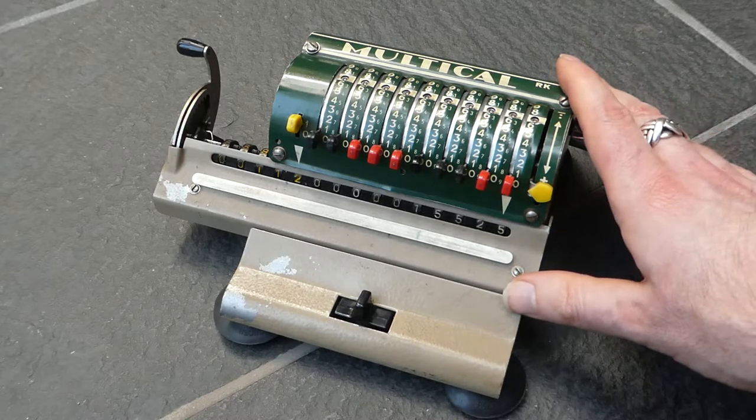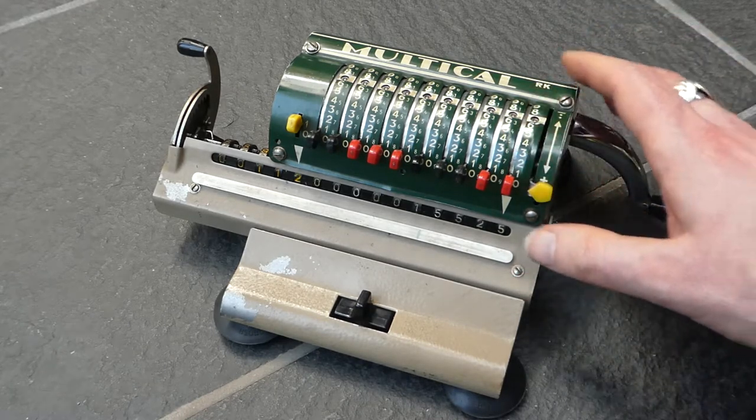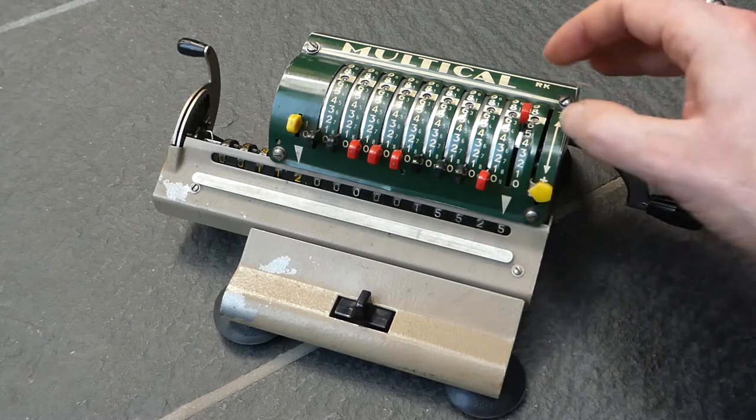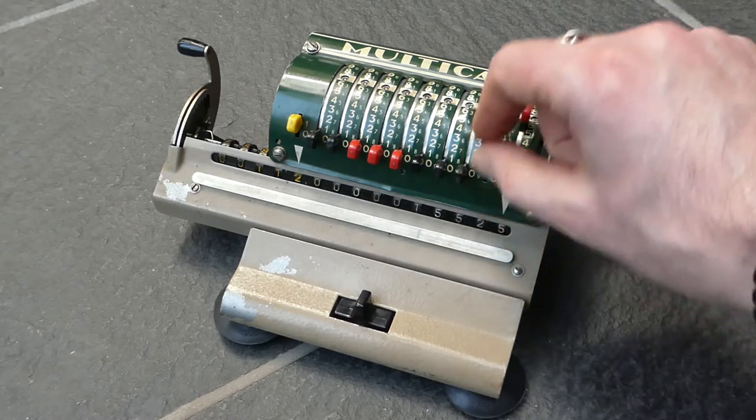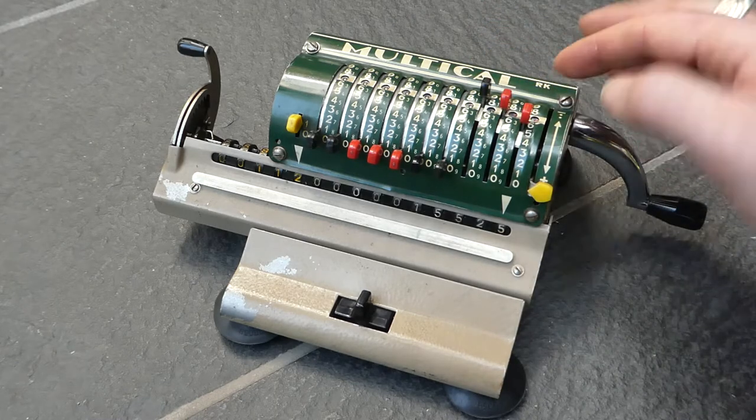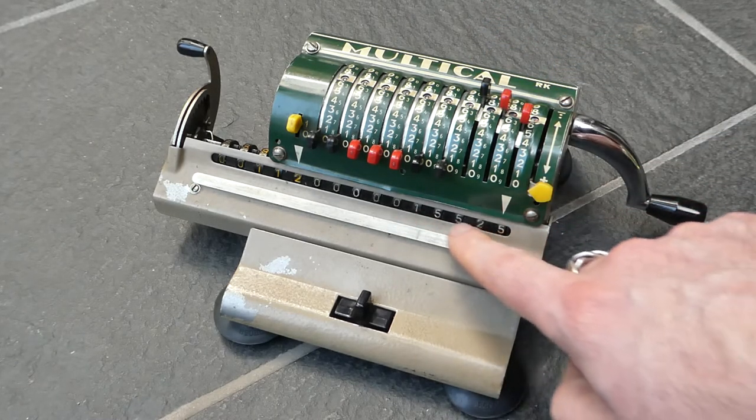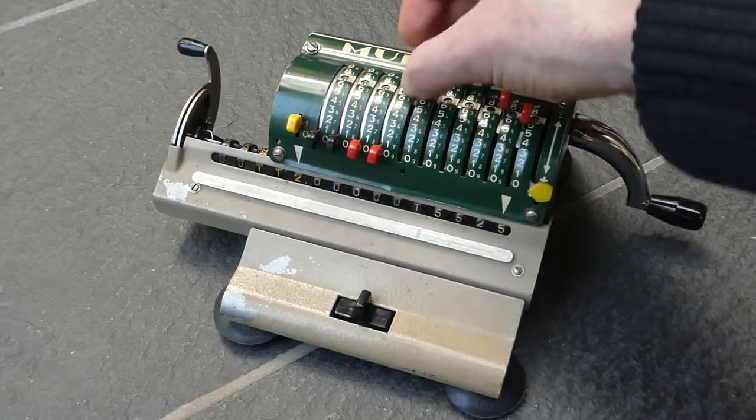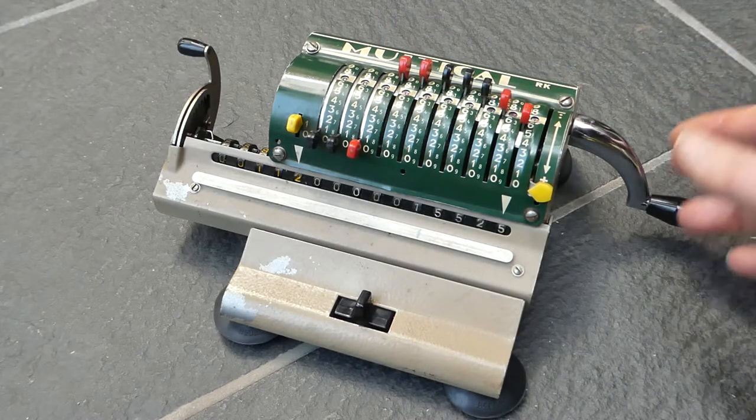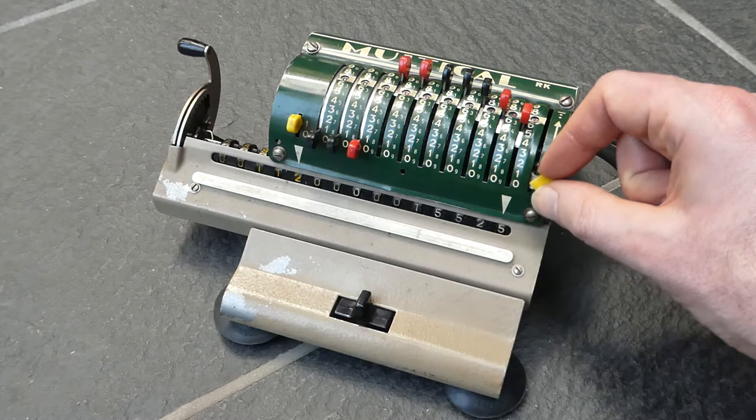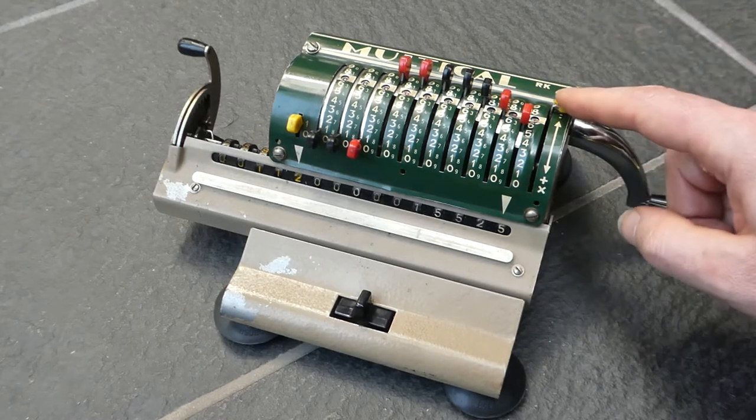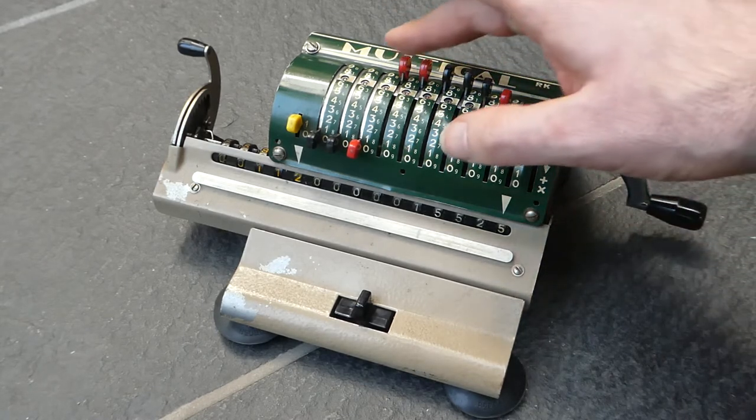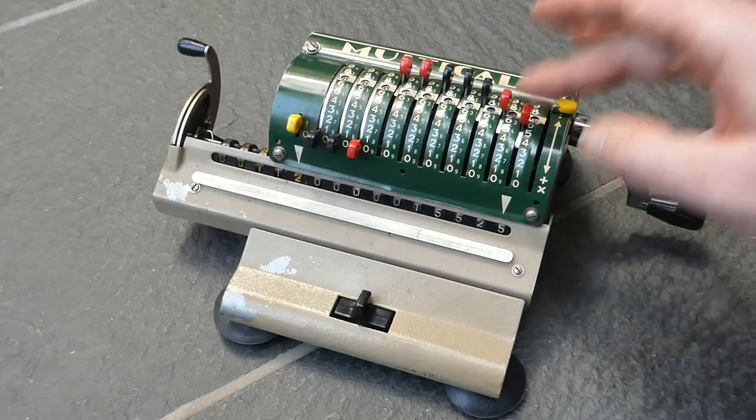But on these earlier versions you still have to use the complementary digits. So to subtract for example 123, you have to set this to the small digit 3, this to 2, this to 1, and because we've got already five digits in use here you have to add some leading zeros. And also you have to switch this to subtraction mode. That takes care of adding an extra 1 to turn this complementary, this 9's complement into a 10's complement.